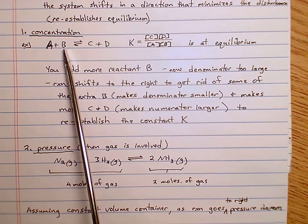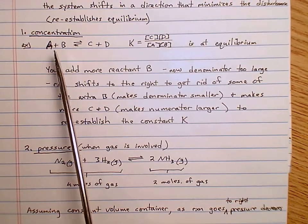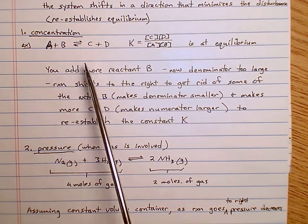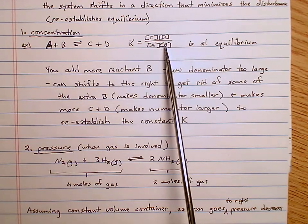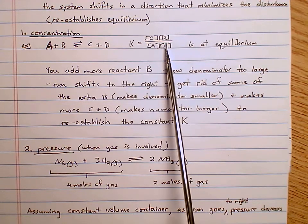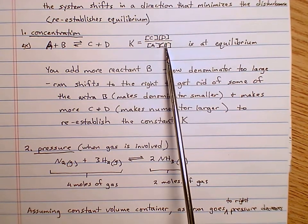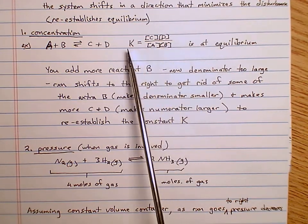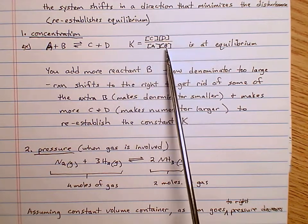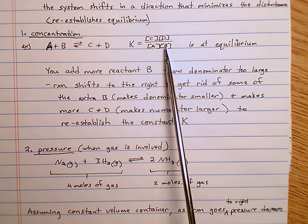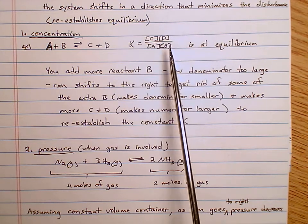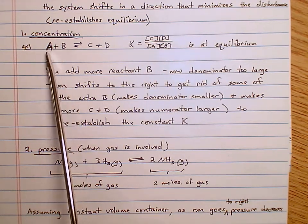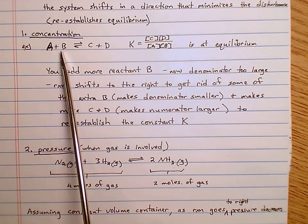You throw in some extra reactant B. You put a stress on the reaction because now the concentration of B has gone up, which means we're no longer at equilibrium — technically we would be calculating Q instead of K. We're no longer at equilibrium; the denominator is too large.